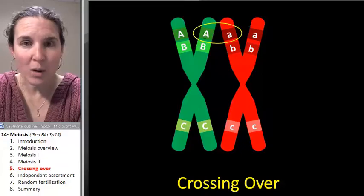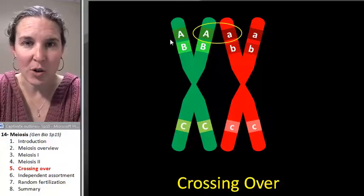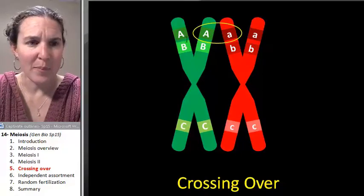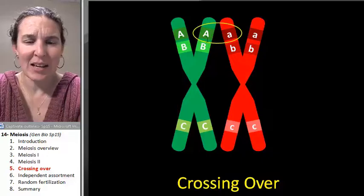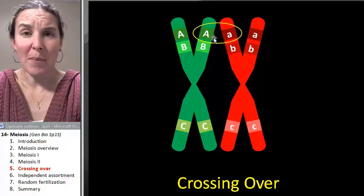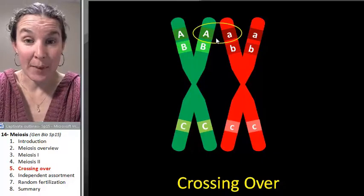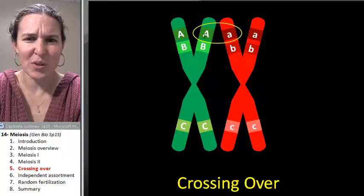Crossing over could totally happen between sister chromatids. But is that even, like, sure, it might happen. It probably does happen. But is there any result?